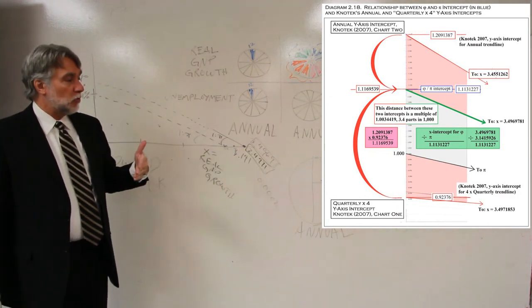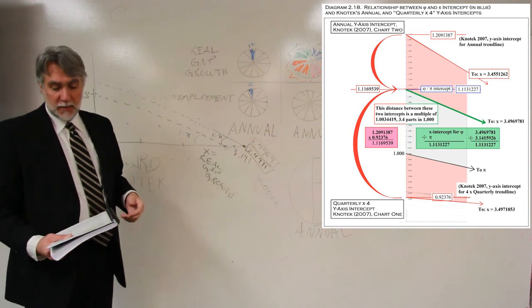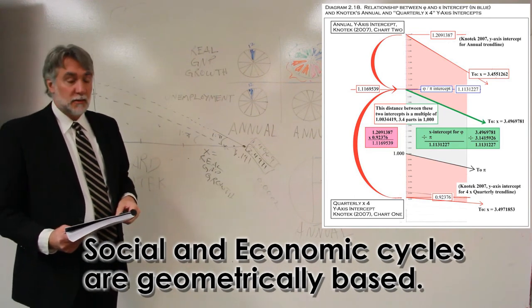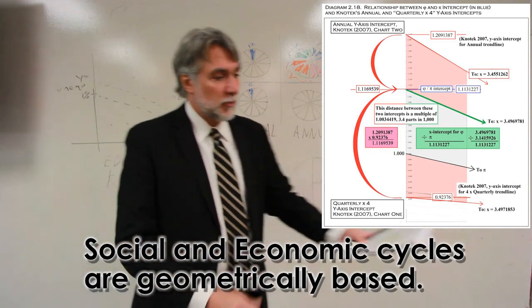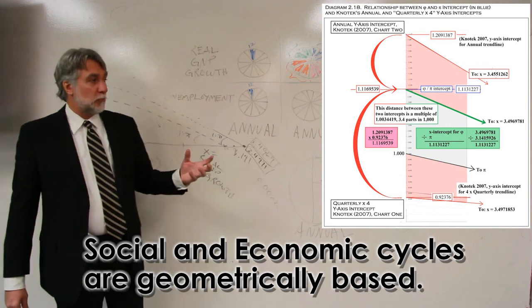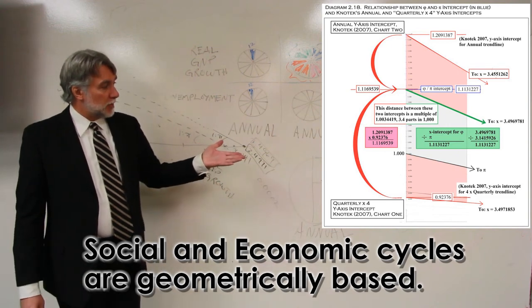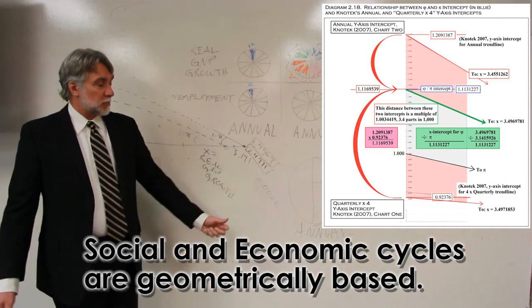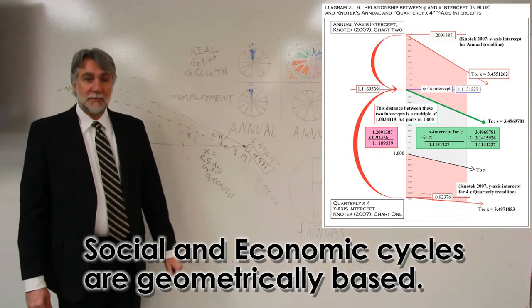But the heart of the whole idea is that, in the United States, social and economic cycles are geometrically based. That they are not something that is simply the result of cause and effect at a random basis. That these things are principles that will be applicable, not only to social and economic studies, but perhaps on a much broader basis. Thank you very much.